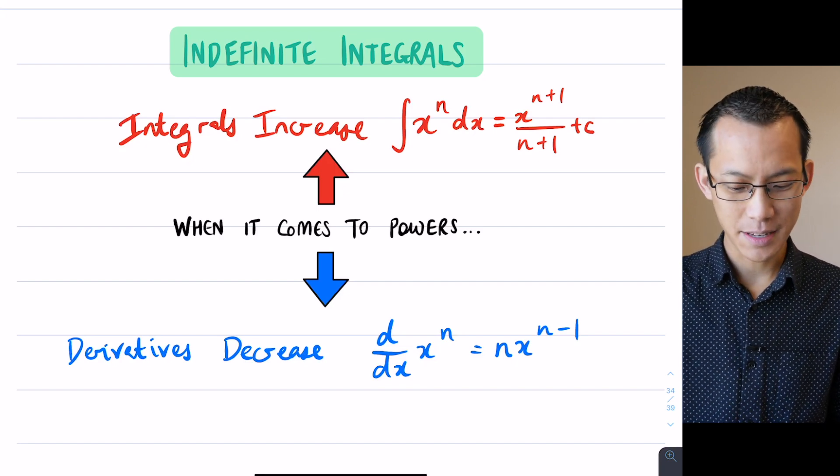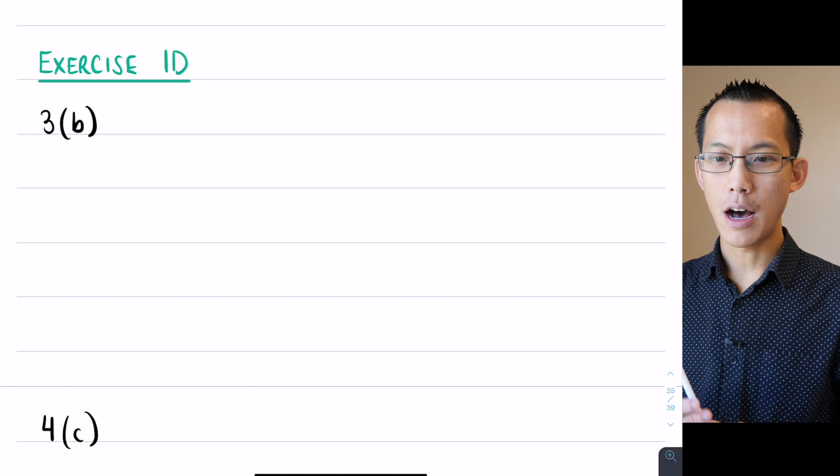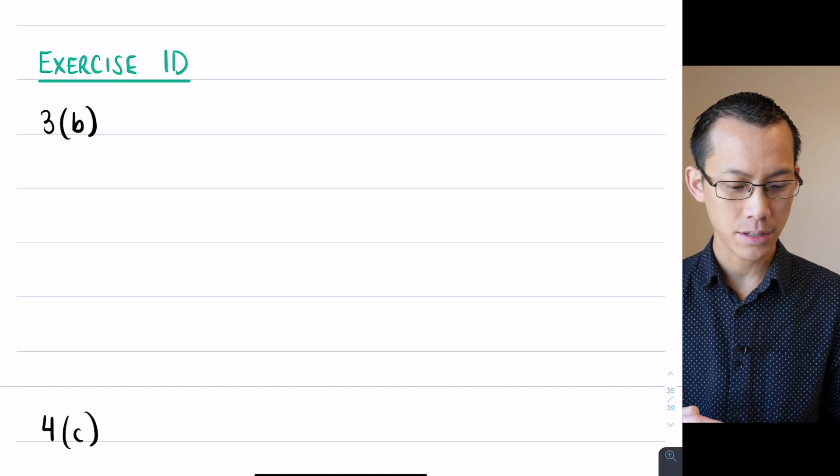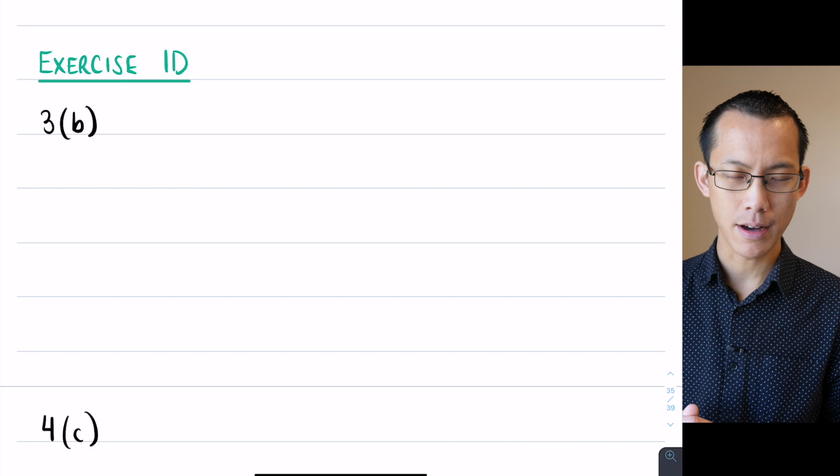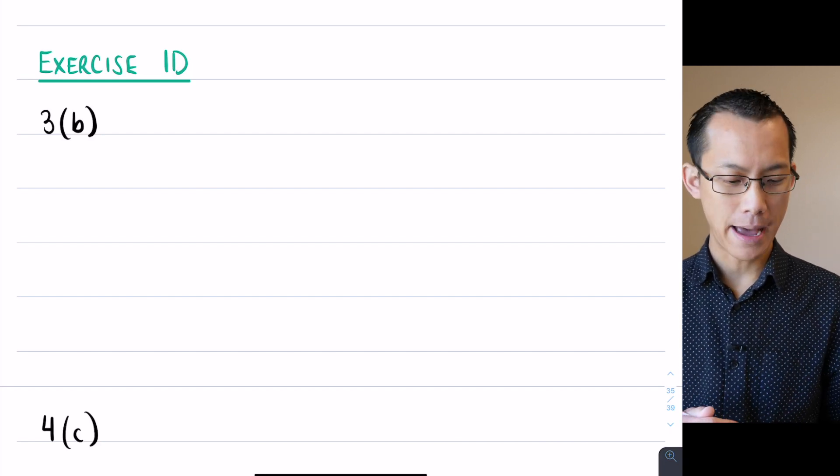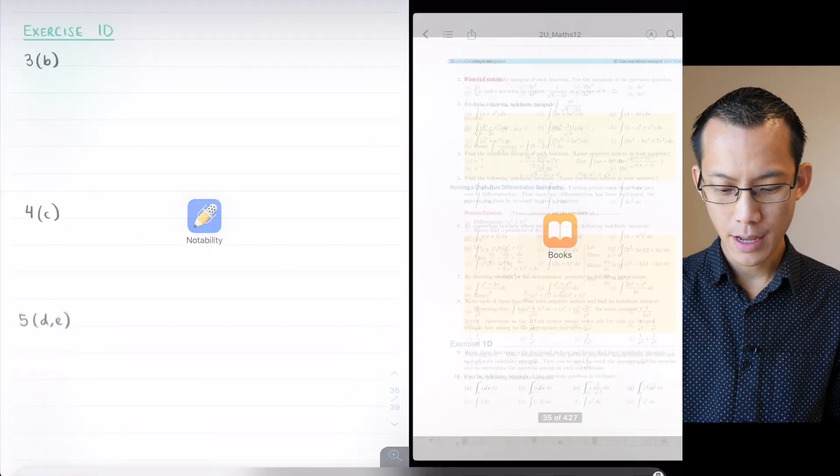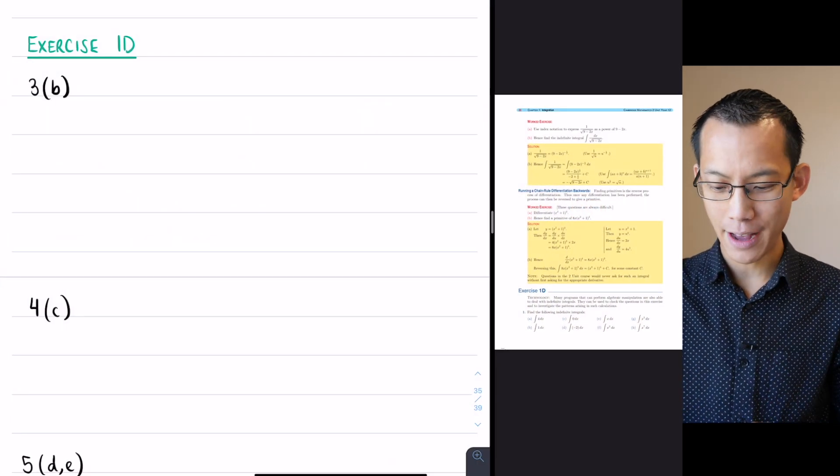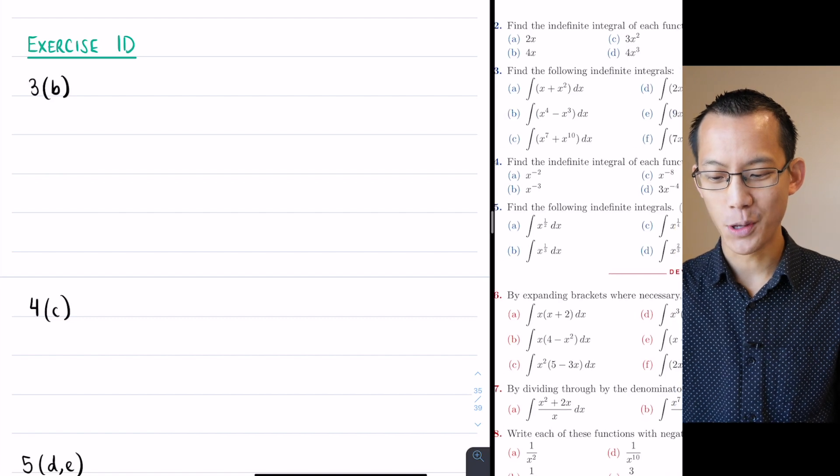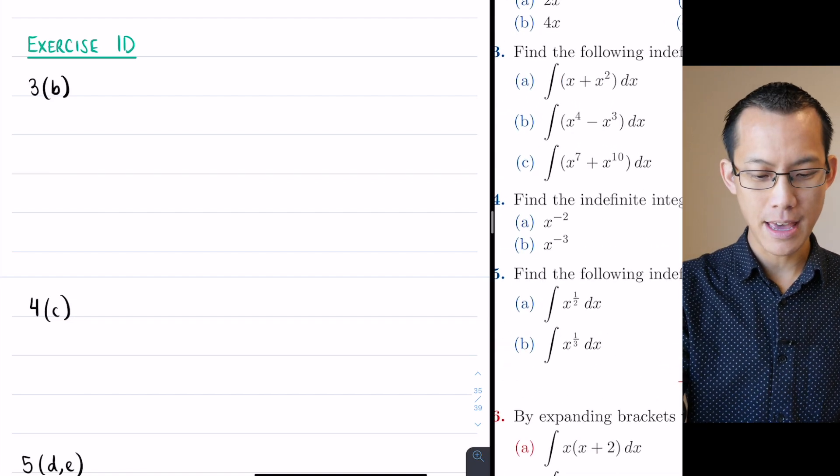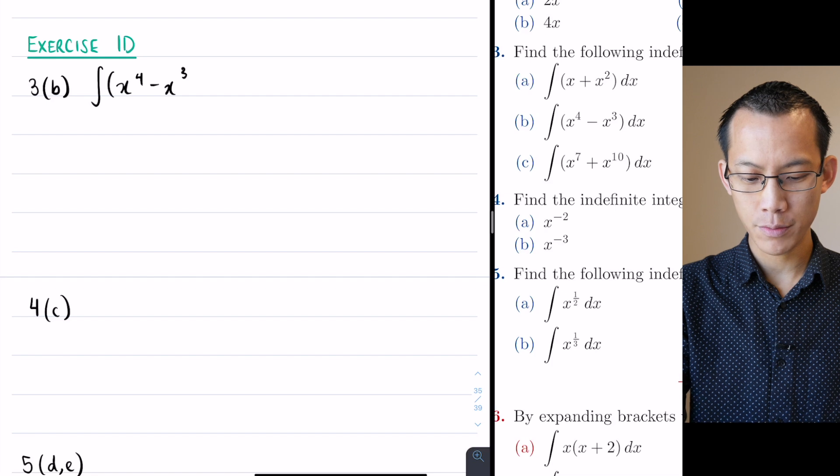So when you are differentiating, if you have this x to the power of n, we learned this rule much earlier: we bring that index down and then we reduce the index by one. So when you have a derivative, the powers decrease. Integrals increase, derivatives decrease. So hopefully that is nice and memorable for you. Let's have a go at some of the example questions in exercise 1D. We're going to do this in two halves. We'll look at some of the simpler ones first.